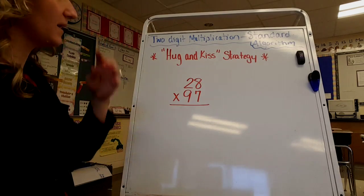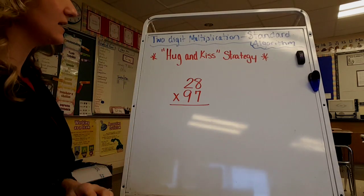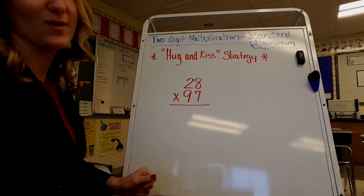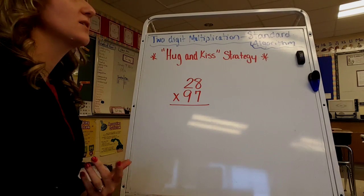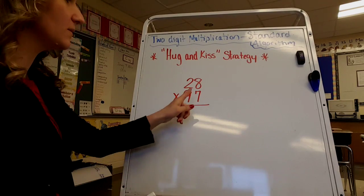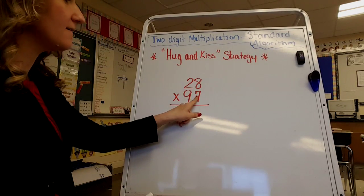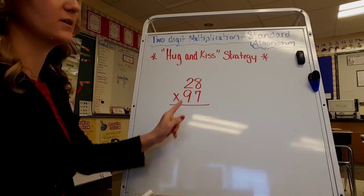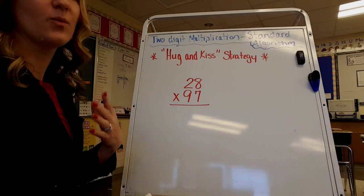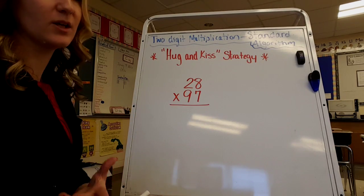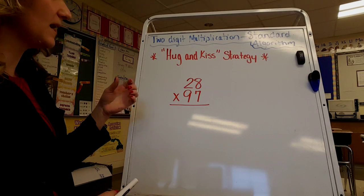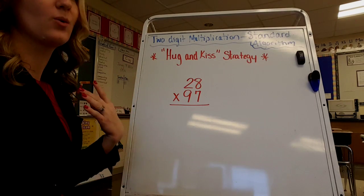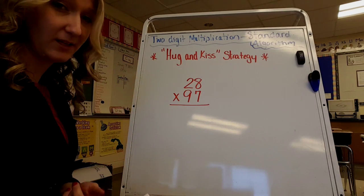So we're going to be multiplying 28 times 97. Now one of the reasons why this strategy is so tricky is because we still have to multiply every place value in both numbers, but this time we're not going to be looking at the actual value of each number — we're just going to be multiplying the digit.